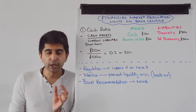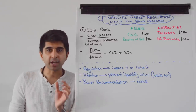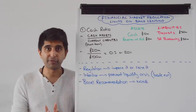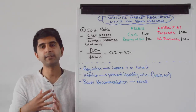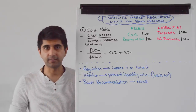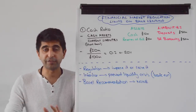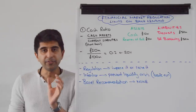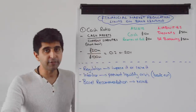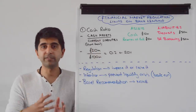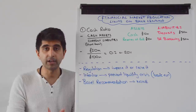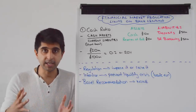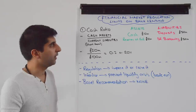Hi everybody. In this video we're going to look at all the different types of limits on bank lending as a form of regulation to protect against bank failure and to protect against systemic risk — full financial sector collapse. We're going to look at all the different ratios and requirements available to limit bank lending and protect against bank failure and systemic risk.